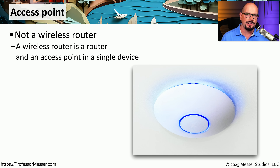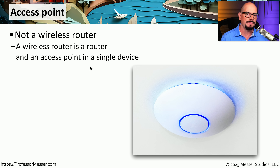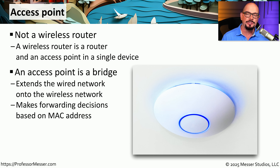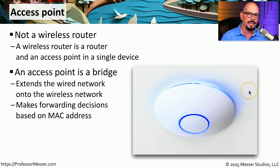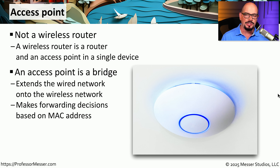If you have devices that need to connect to the network over a wireless connection, then you need an access point. This is a bit different than the wireless router you might have in a small office or home office configuration because this is not a router — it simply switches between a wired network on one side and a wireless network on the other. We often refer to this as a bridged communication because there's no translation of IP addresses and no routing taking place. We are effectively switching between a wireless network and a wired network. Because of that, an access point makes its forwarding decision very similar to a switch — it's looking at the destination MAC address to determine if a frame needs to go out the wireless network or be forwarded onto the wired network.